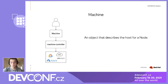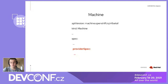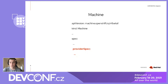Our first and main building block of Machine API is the machine object. The machine object is an object that describes the host. The user creates or deletes machines and our controller interacts with cloud APIs based on this action — it either creates or deletes the machine from the cloud. You can see that the machine is just a normal Kubernetes resource: it has namespace, name, spec, and status. The important part here is provider spec, because provider spec is a template for describing machines. The definition for provider spec is a bit different for each cloud provider, and provider spec is a place where you can specify options like instance size.